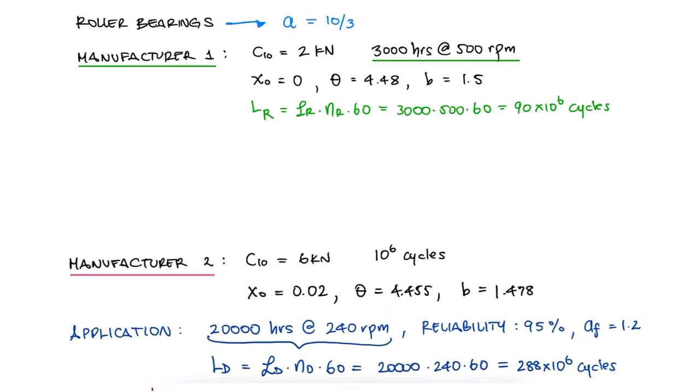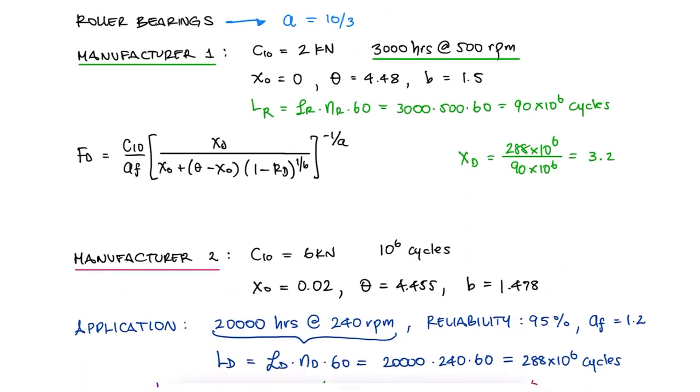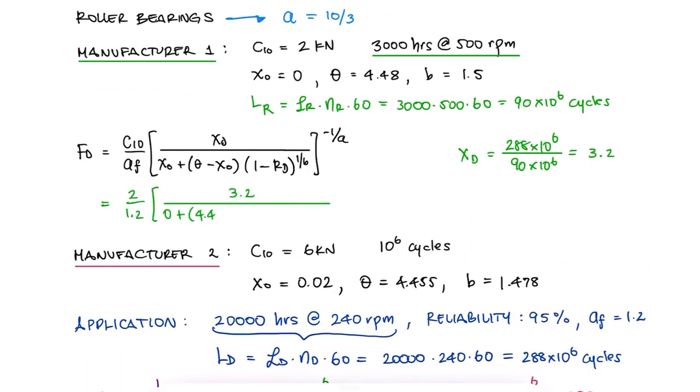With a rated load of 2 kN for manufacturer 1, we find that we can subject that bearing to a load of 1.01 kN for 20,000 hours at 240 rpm.